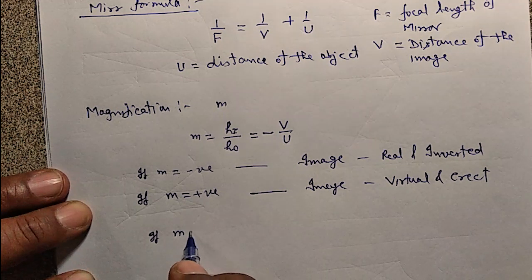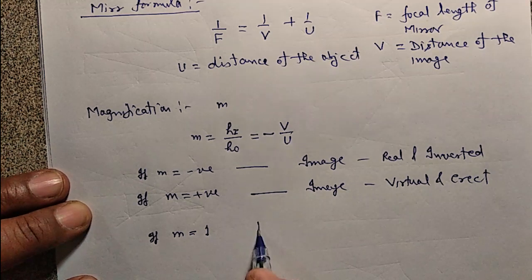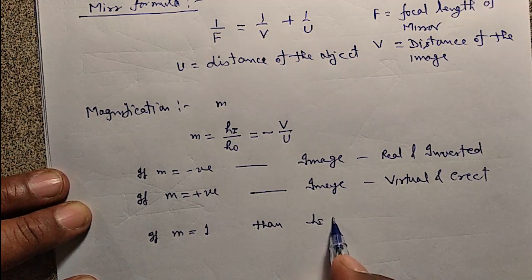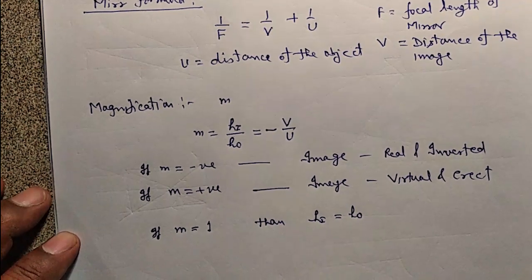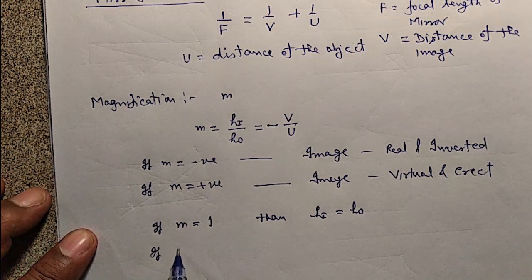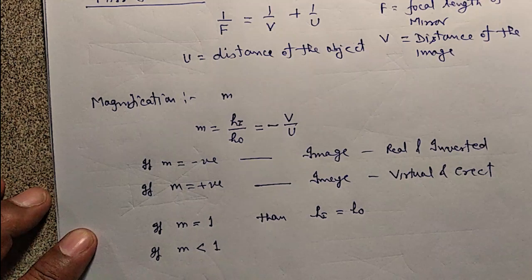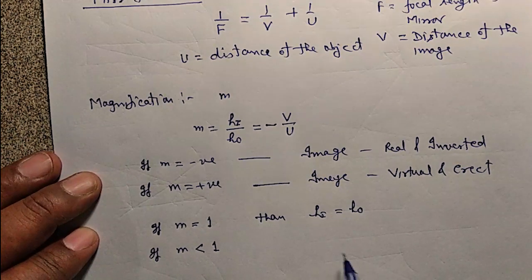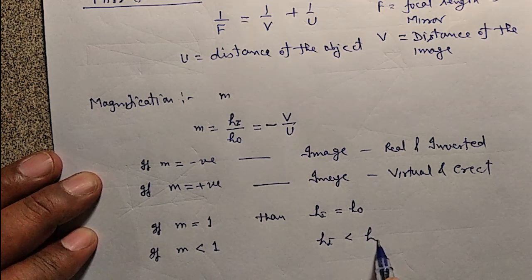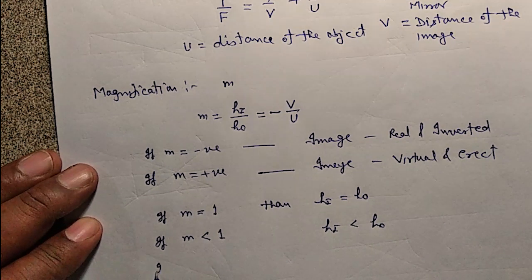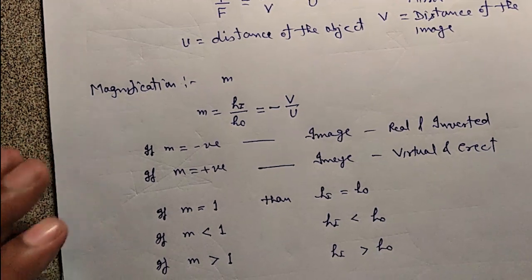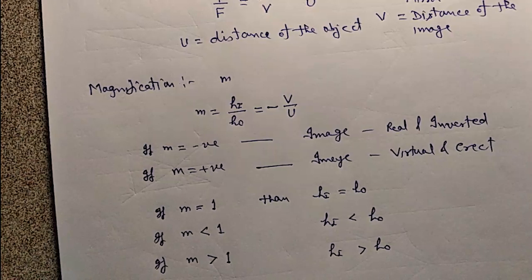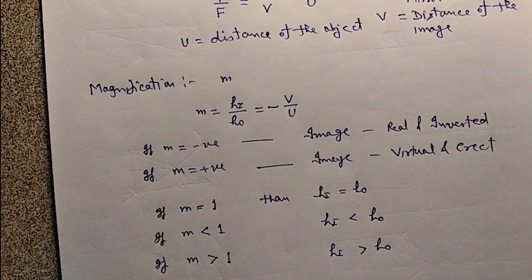If M is equal to 1, then HI is equal to HO, meaning the height of the image equals the height of the object. If M is less than 1, the height of the image is less than the height of the object. If M is greater than 1, then HI is greater than HO. In this way we can solve the numericals from the NCERT book.